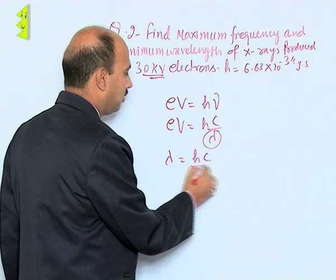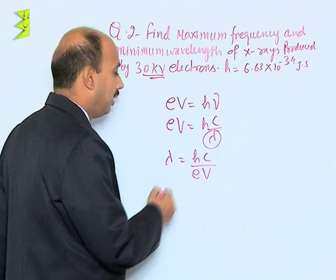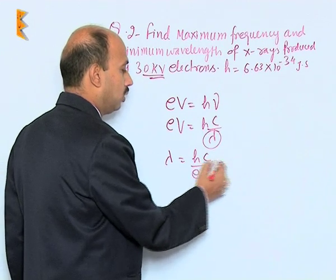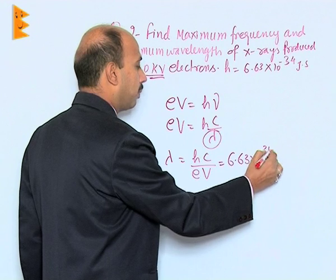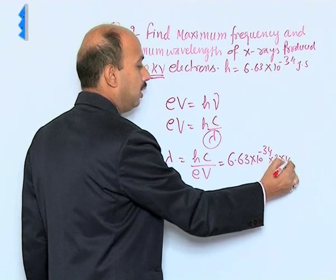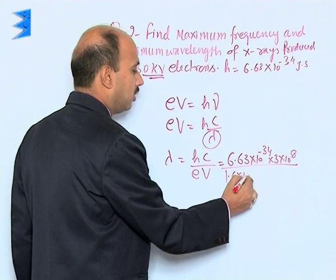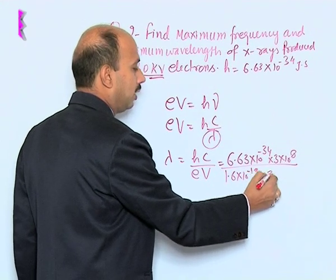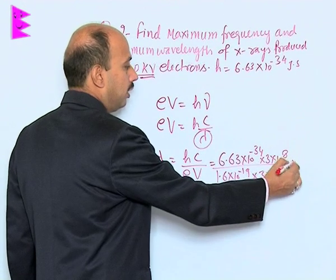So, lambda is equal to H C upon E V. And here we have already, you know, this value 6.63 into 10 raised to power minus 34, 3 into 10 raised to power 8, divided by 1.6 into 10 raised to power minus 19 into 3 into 10 raised to power 4. That is in meters.